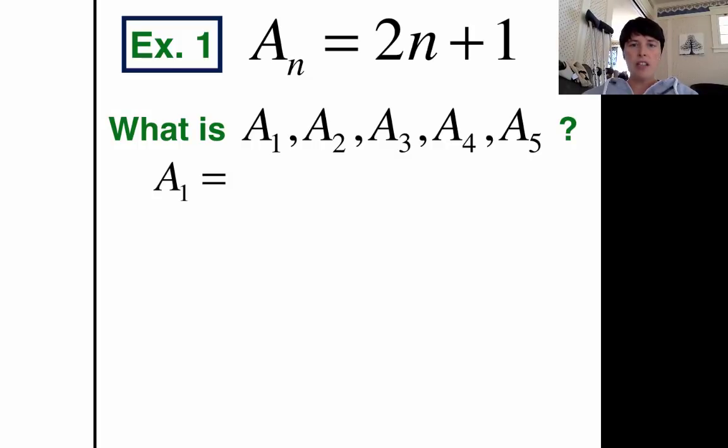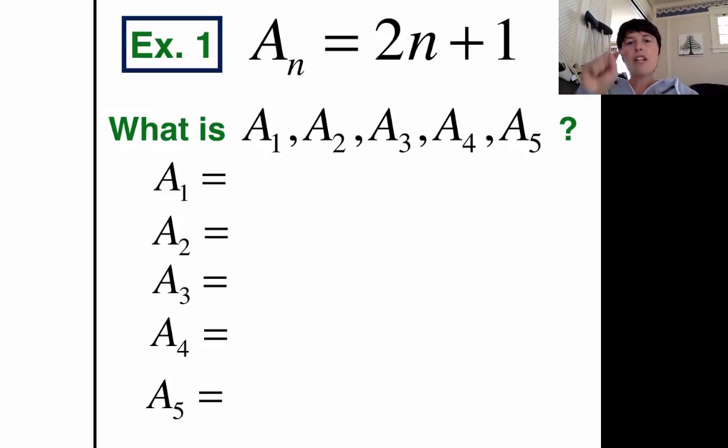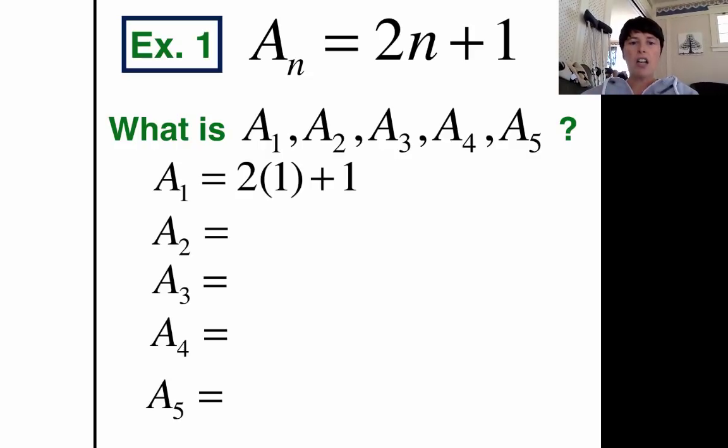What I'm going to do is I'm going to write out A1, A2, A3, A4, and A5. And for each of those, we're going to replace the equation with the n with the number. So instead of 2n plus 1, I'll do 2 times 1 plus 1.